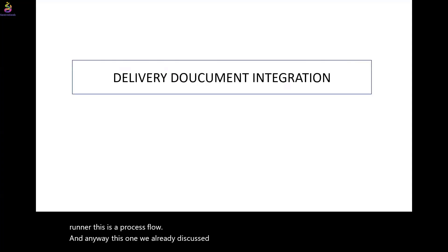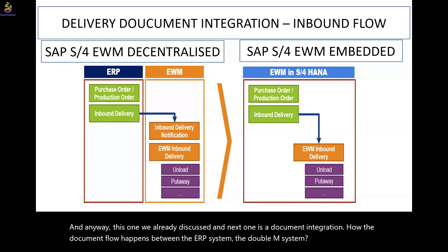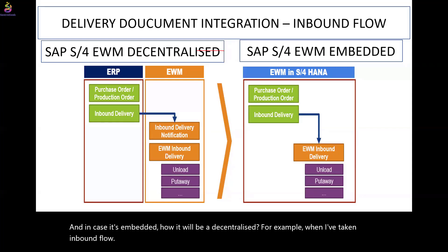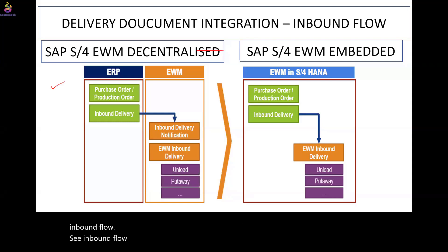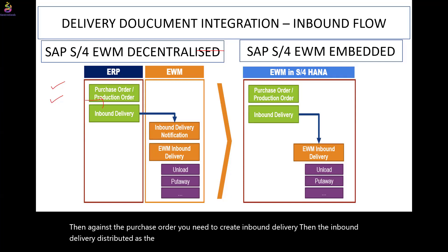Next is document integration — how the document flow happens between the ERP system and the WMS system, and how it is embedded versus decentralized. For the inbound flow, it starts from the purchase order. Against the purchase order you create an inbound delivery, and that inbound delivery is distributed to WMS as an inbound delivery notification, then as an inbound delivery.